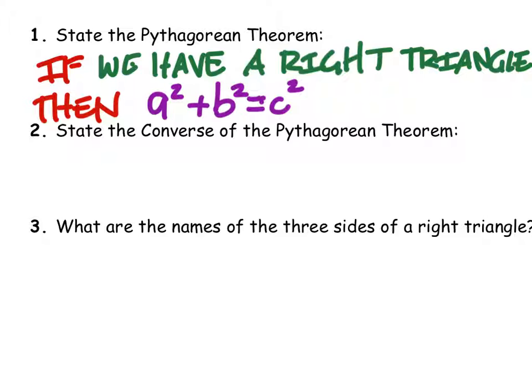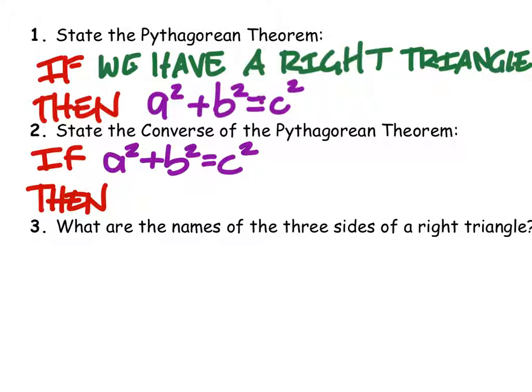Well, if that is the Pythagorean Theorem, then the converse also is a conditional if-then statement. But we're going to switch those around. So if a squared plus b squared equals the hypotenuse c squared, then we have a right triangle.